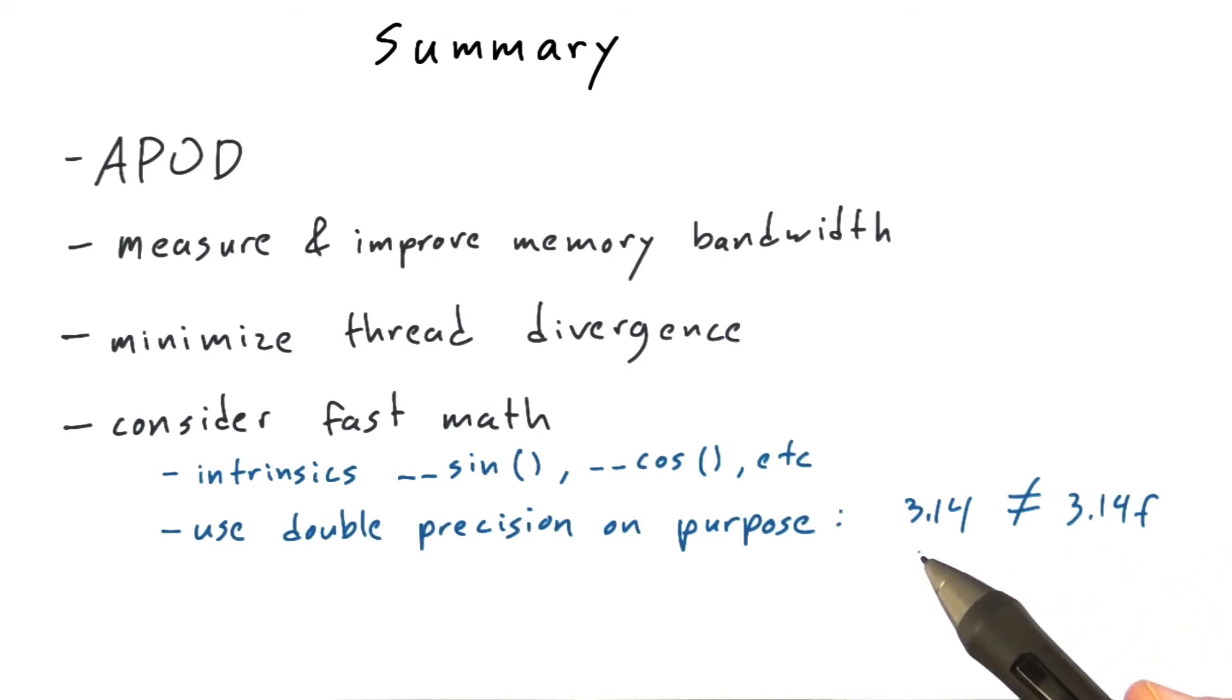So just typing the literal 3.14, well that's a 64-bit double precision number, and the compiler will treat it as such. Whereas typing 3.14f tells the compiler, hey, this is a single precision operation. You don't have to promote everything I multiply this by, or add this to, to be a double precision number.